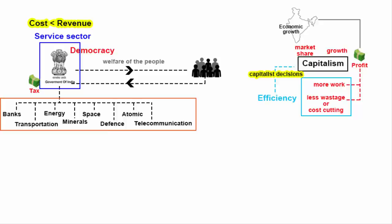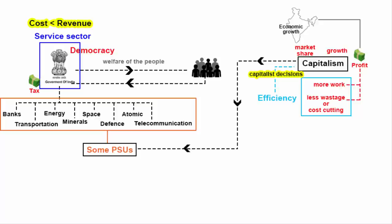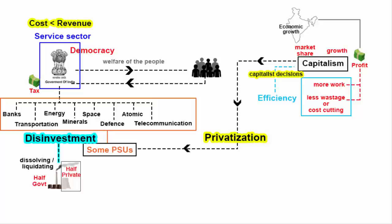Looking at the huge losses and debts, the Government of India is inviting private companies to operate government PSUs. The term used for this is privatization. The government wants to sell these PSUs to the private sector, and the selling part is termed disinvestment — meaning dissolving or putting assets fully or partially on sale. The whole idea is to unlock these PSUs' true market value or potential. India is now moving towards capitalism, and in a capitalist economy, a government's role is limited to regulation and administration.